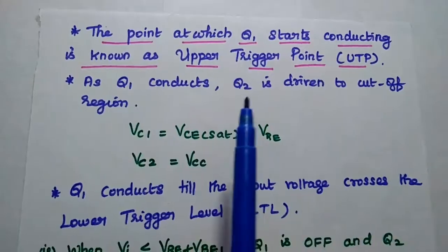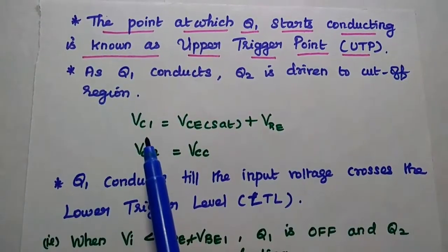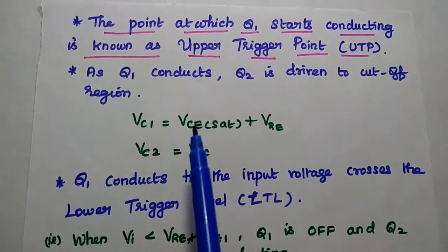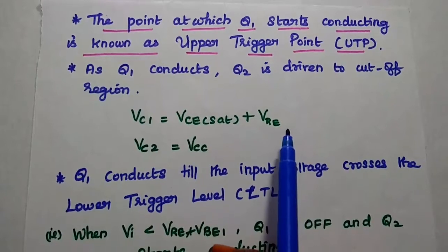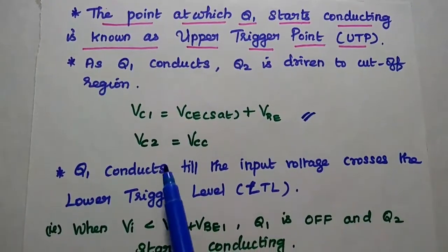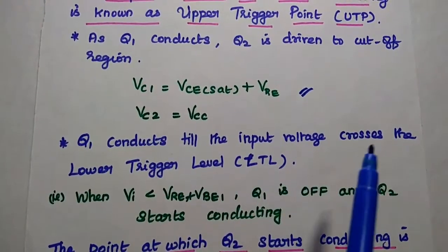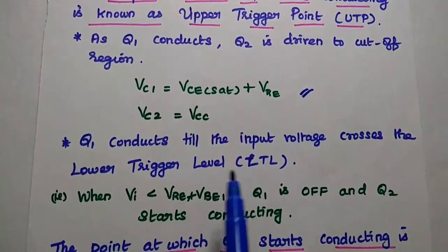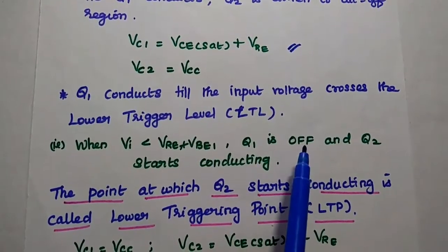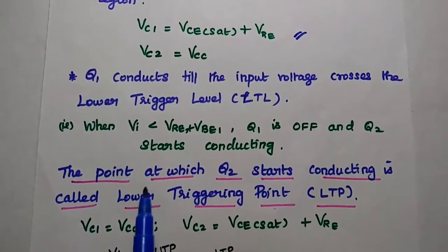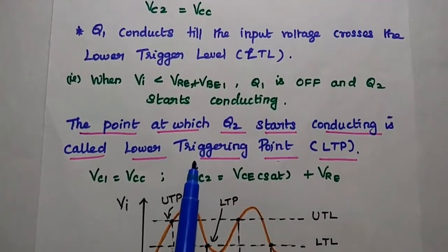As Q1 starts conducting, Q2 is driven into the cutoff region. The collector voltage at Q1 equals VCE(sat) + VRE, and VC2 becomes VCC. Q1 continues conducting until the input voltage crosses the lower trigger level — that is, when the input voltage is less than VRE + VBE1, Q1 is in the off condition and Q2 starts conducting. The point at which Q2 starts conducting is called the lower trigger point (LTP).